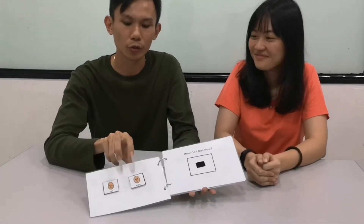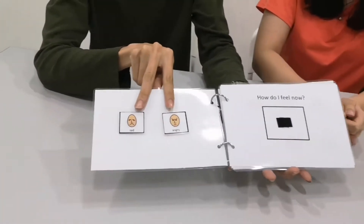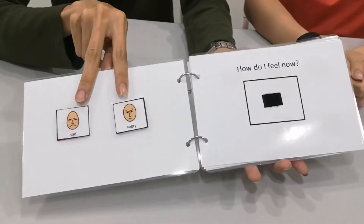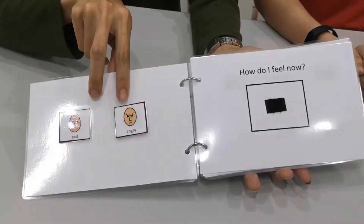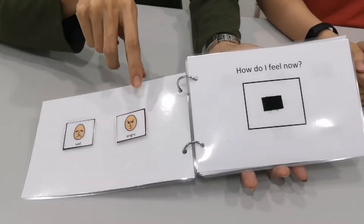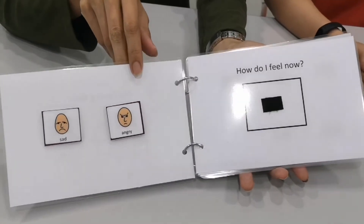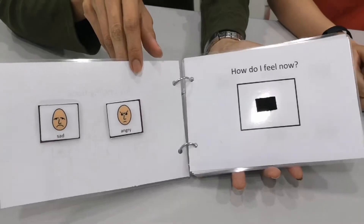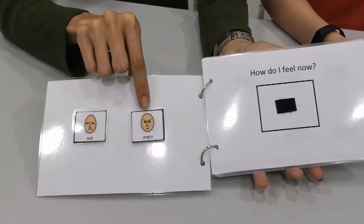We only choose two emotions, which is sad and angry. Then we will create a few scenarios for them to create their own strategy to overcome when they are feeling sad and angry.